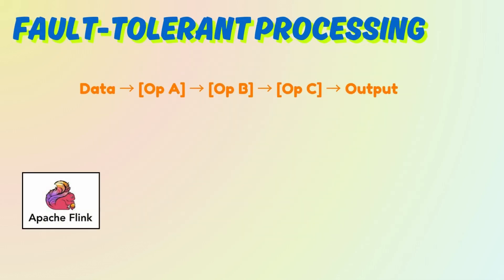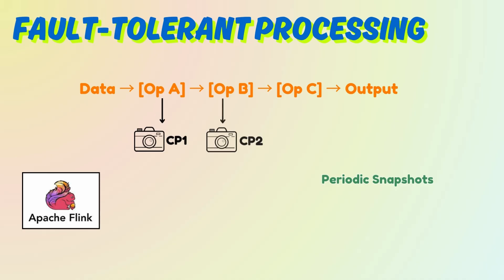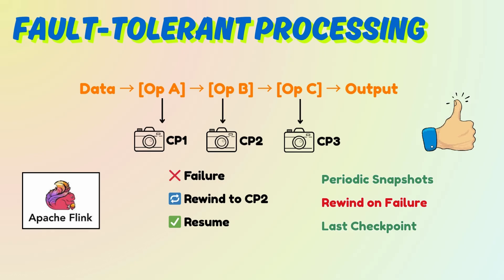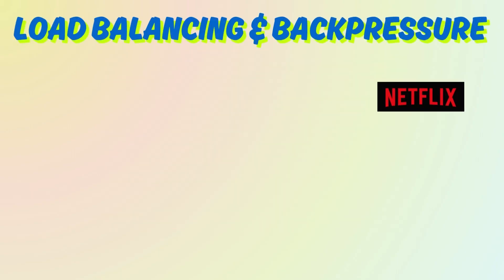Now let's talk about fault-tolerant processing, because in real-time systems failure is not just likely — it is expected. Apache Flink takes periodic snapshots of your processing state. If anything fails, it just rewinds to the last checkpoint and continues like nothing happened. That's stateful recovery done right.